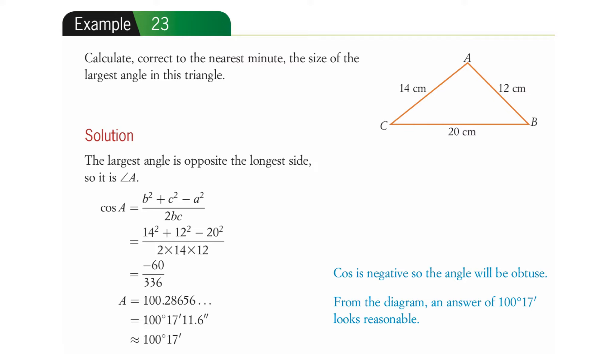And then they've asked for it in minutes, to the nearest minute. So this decimal part, you multiply that by 60 and you'll get that in a decimal. And then you take the decimal part from that and multiply it by 60 and you'll get the 11.6 seconds. But it says to the nearest minute there, so that's 100 degrees 17 minutes.